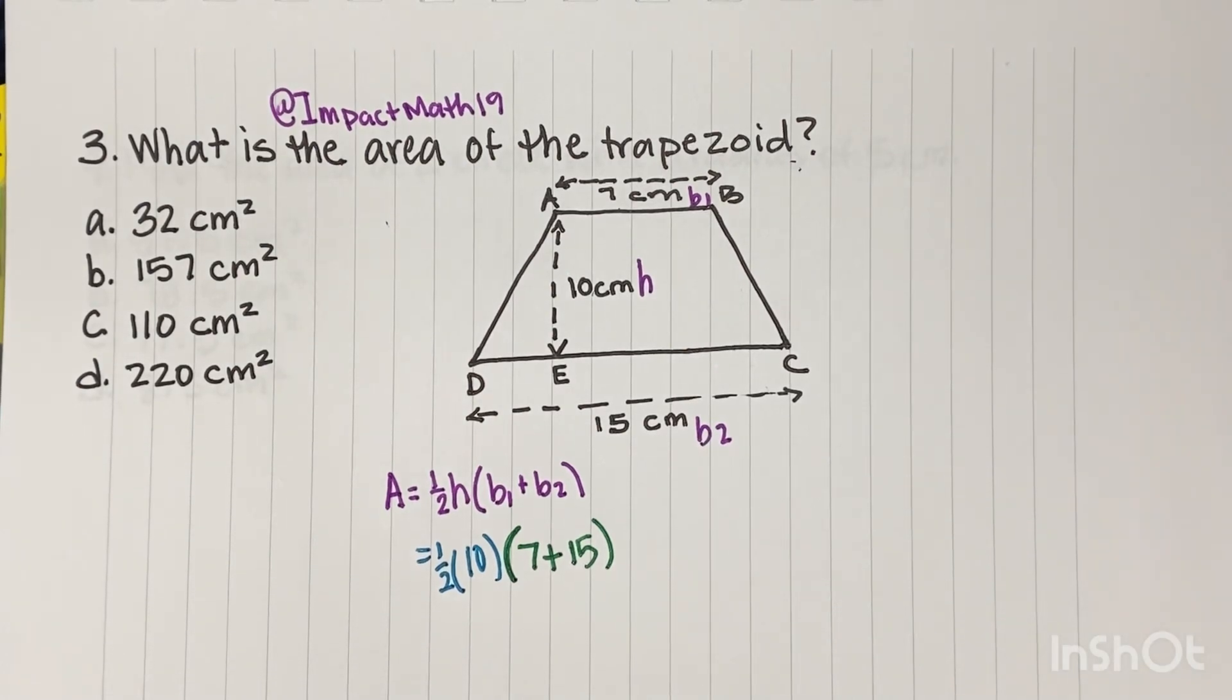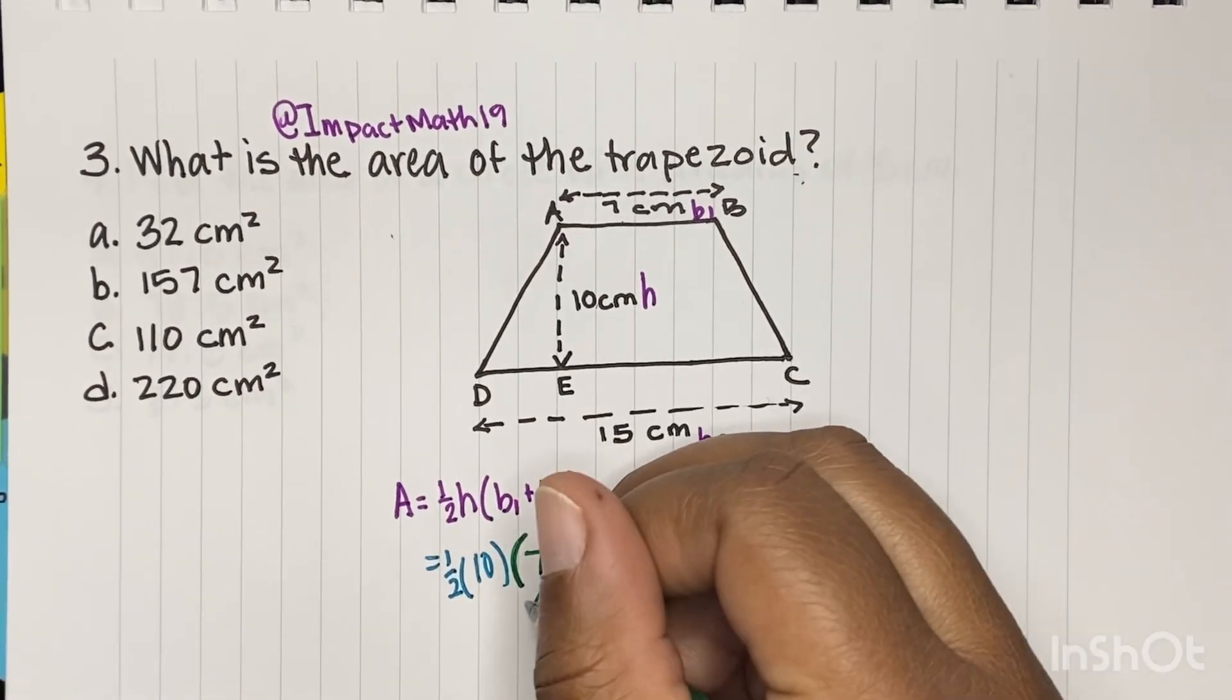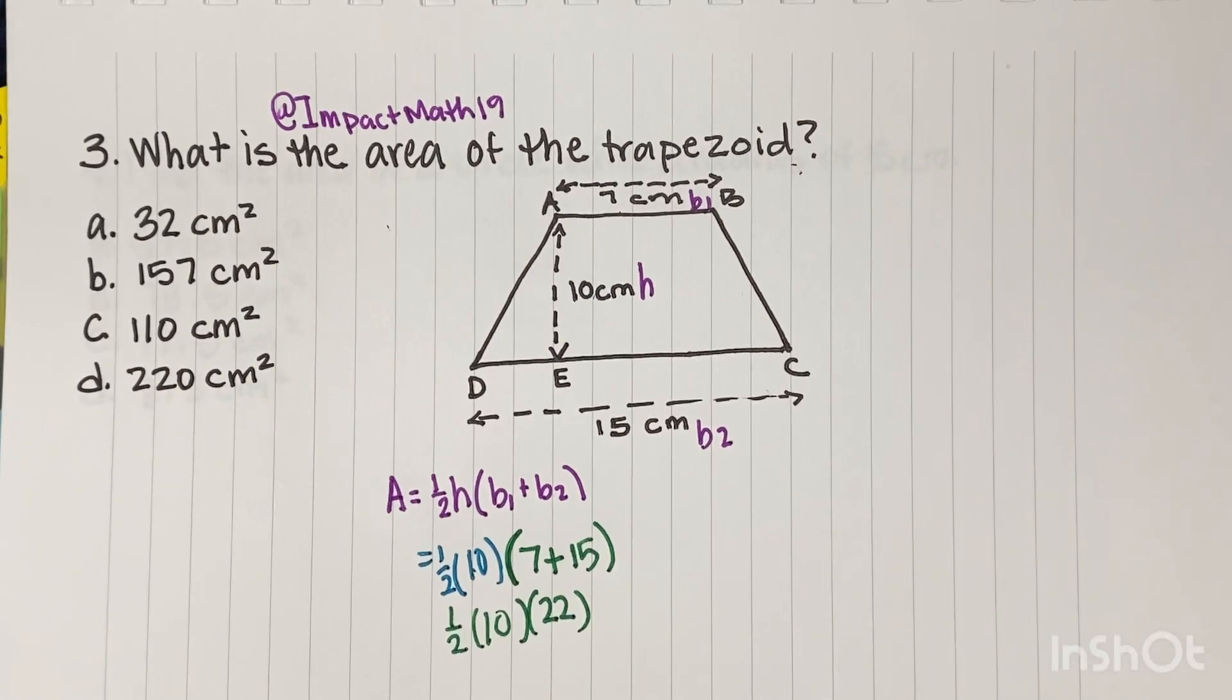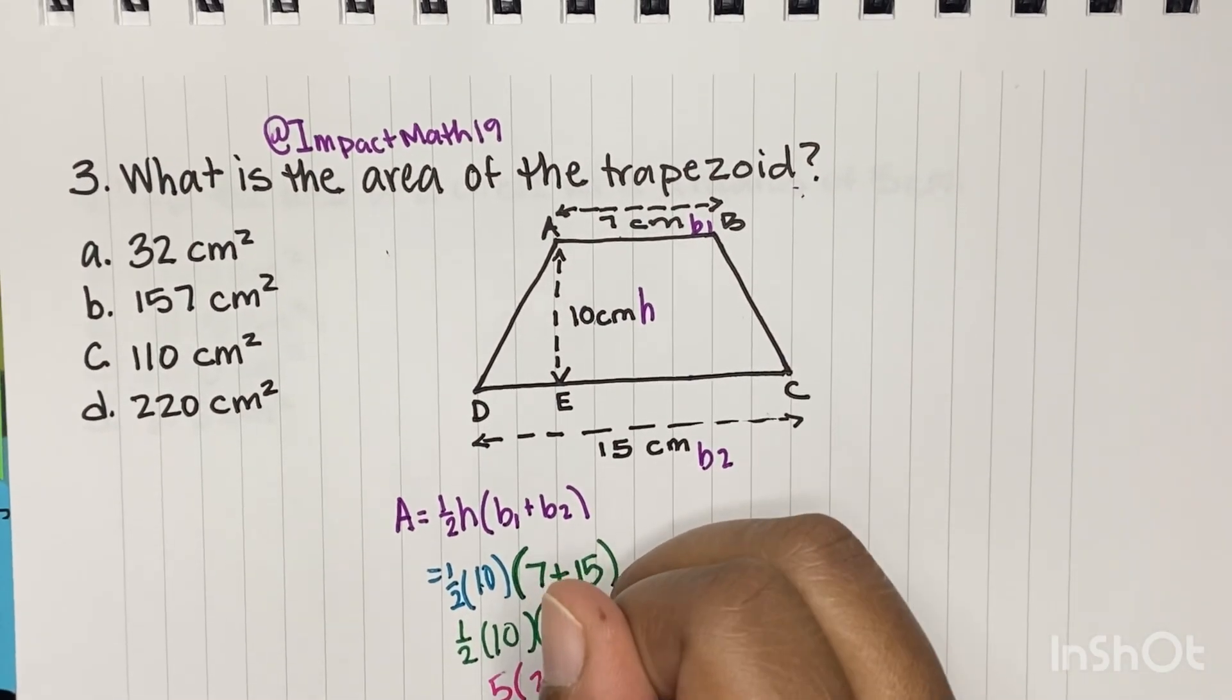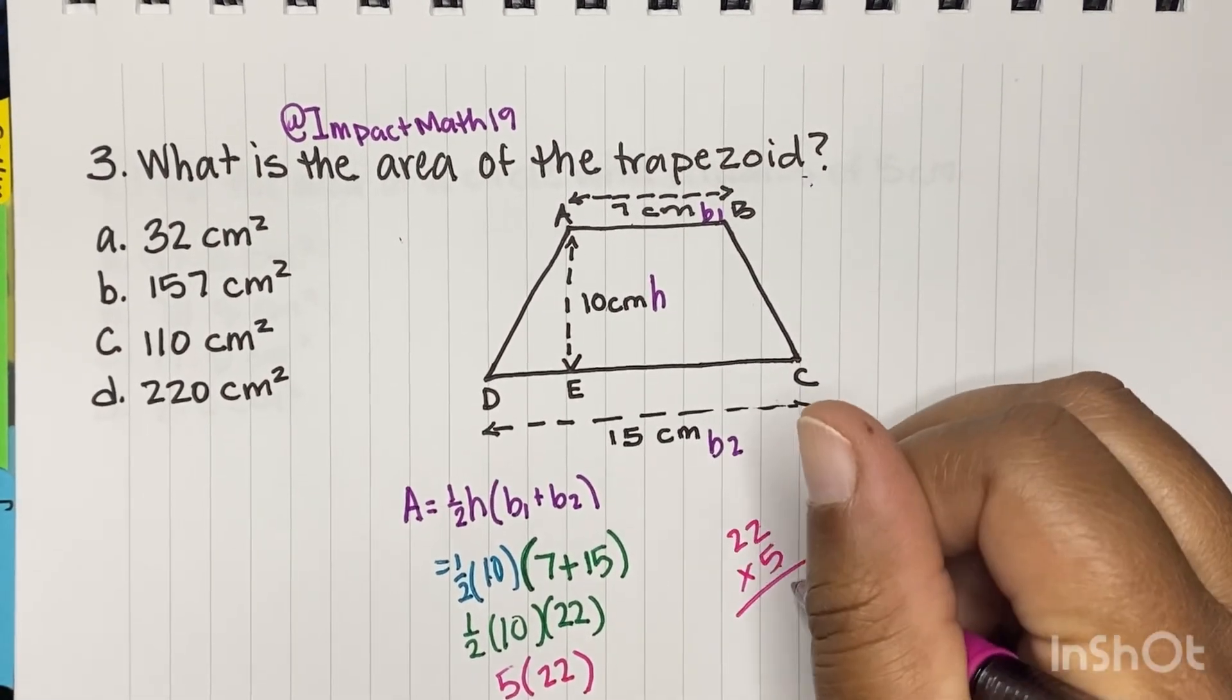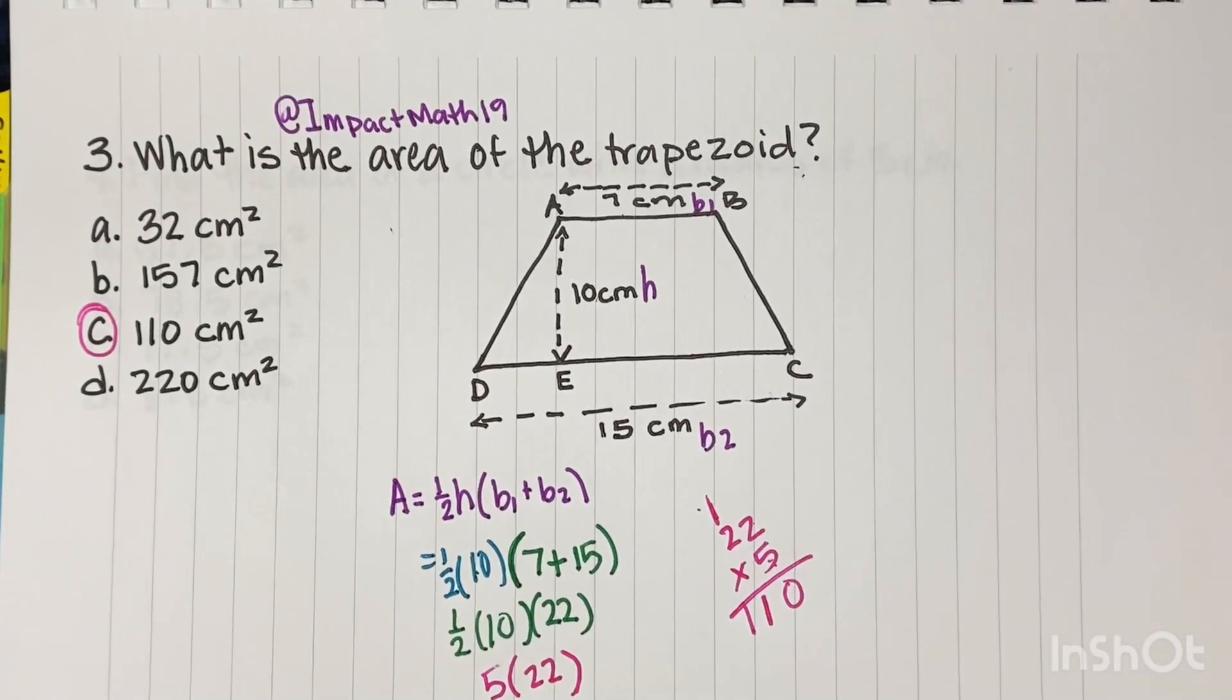Okay, so now this goes to order of operations. You want to work within your parentheses. So 7 plus 15 is going to be 22. Keep the parentheses because you have a 10 attached to it. And we're going to drop down this half. And then we have a half of 10, which is 5. And then 5 times 22. So we're going to do 22 times 5. And 5 times 2 is 10. Okay, carry the 1. And 5 times 2 is 10 plus 1 is 11. So C would be our answer.